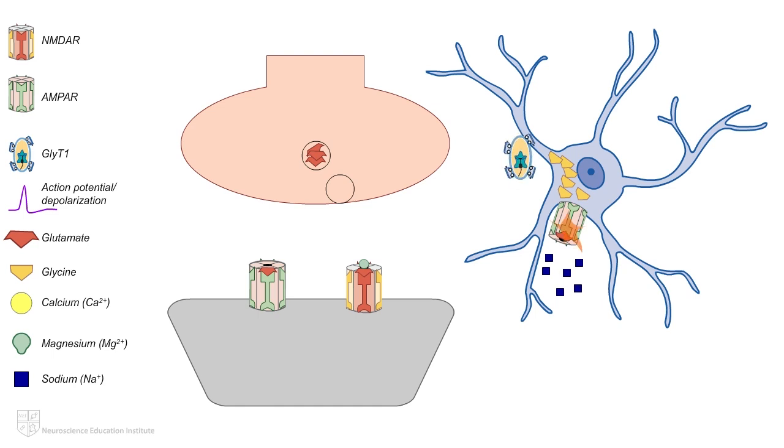Binding of glutamate to the AMPA-R on the postsynaptic neuron depolarizes that membrane, leading to removal of the magnesium block from the NMDAR ion channel. With glutamate and its coagonist glycine, or d-serine, bound to the respective sites on NR2 and NR1 subunits and the magnesium block removed, calcium is free to move into the postsynaptic neuron through the ion channel at the center of the NMDAR.